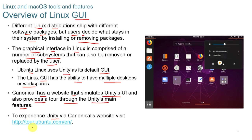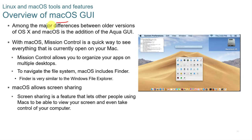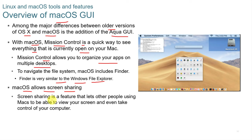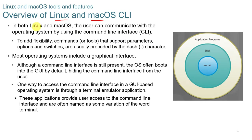The major difference between older versions of OS X and Mac OS is the addition of the Aqua GUI. With Mac OS, Mission Control is a quick way to see everything currently open and allows you to organize apps on multiple desktops. To navigate the file system, Mac OS includes Finder, which is very similar to Windows File Explorer. Mac OS also allows screen sharing, a feature that lets other users on Macs view your screen or even take control of your computer.